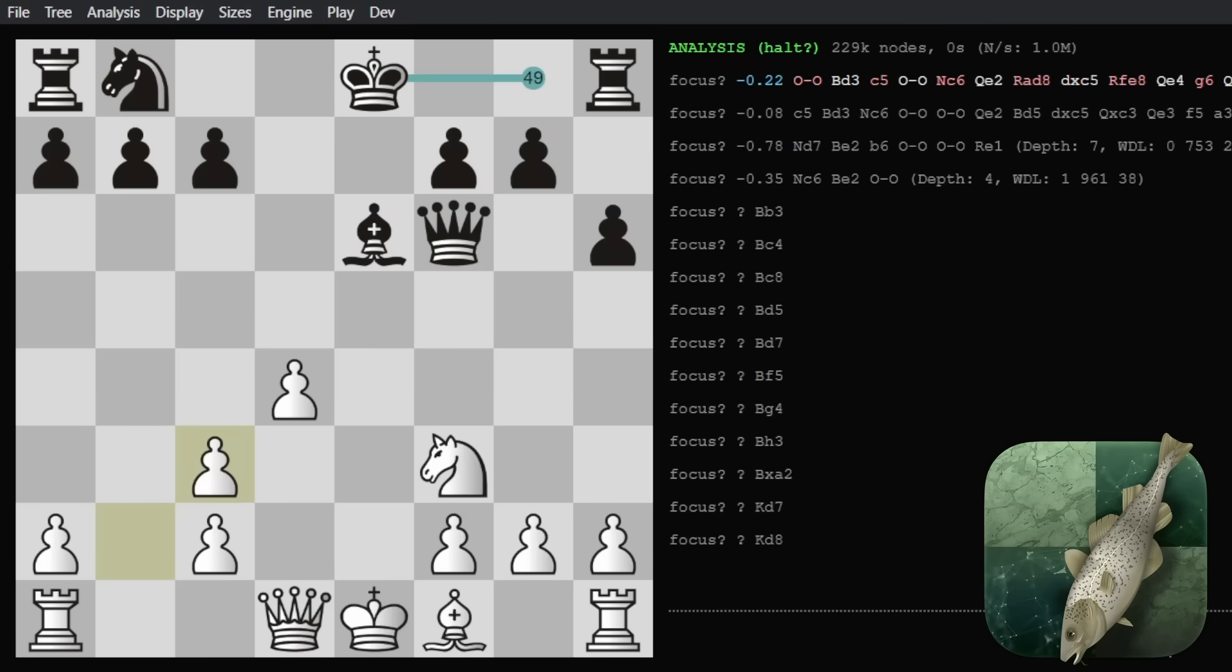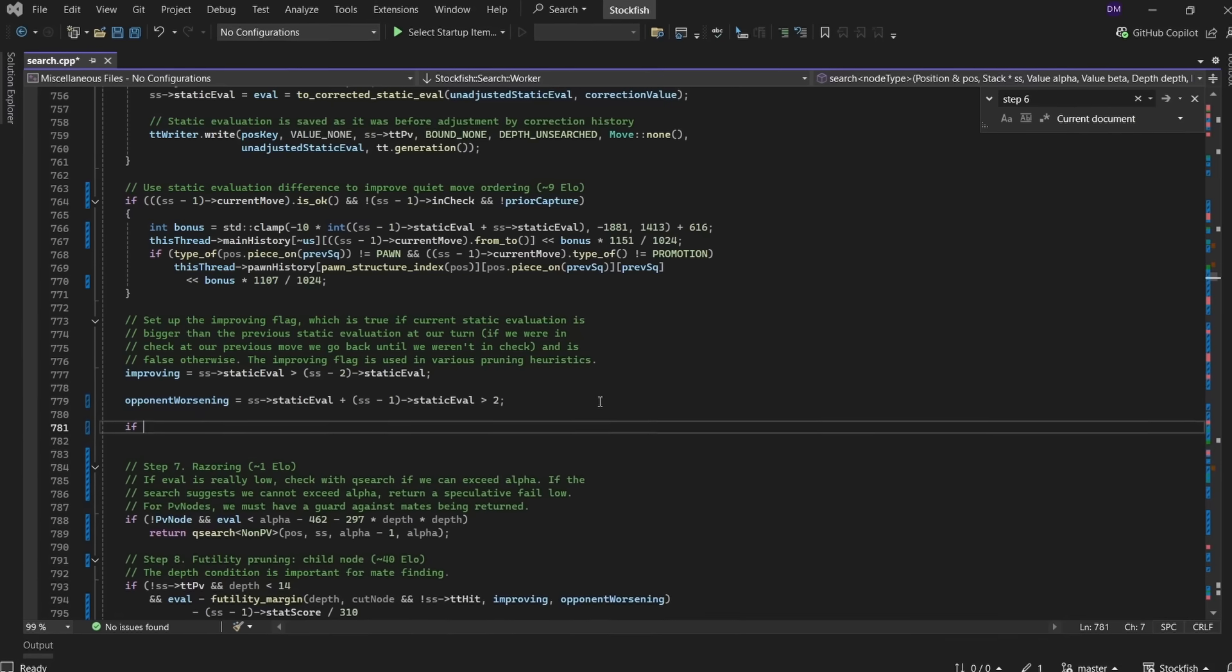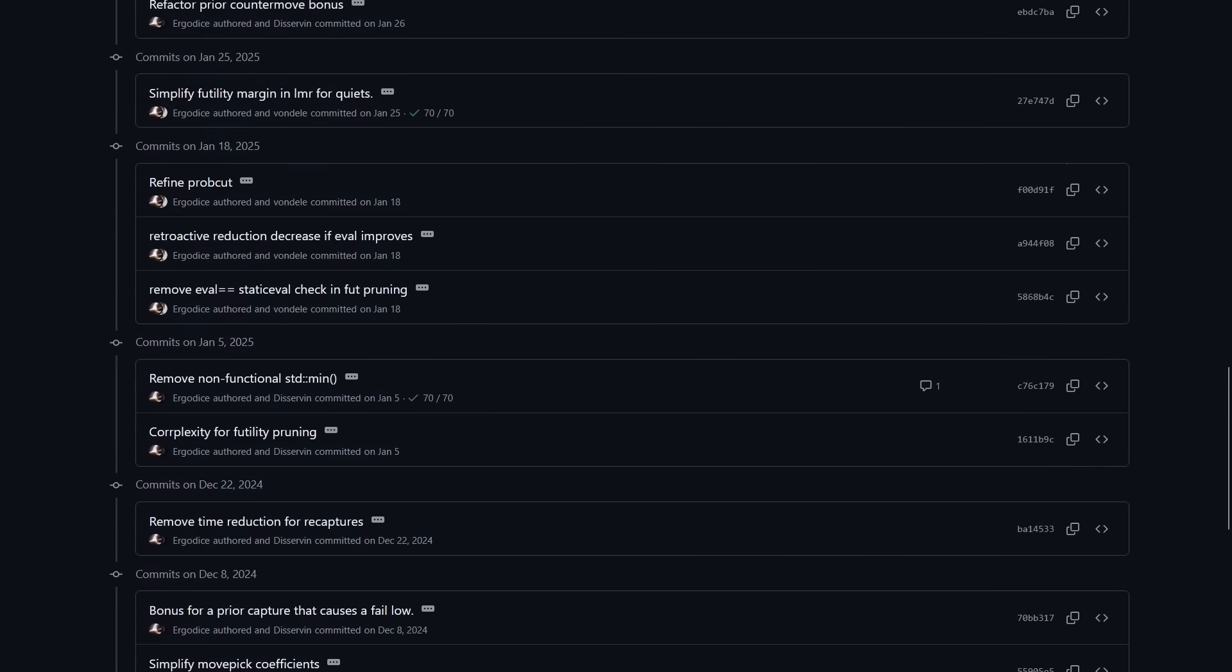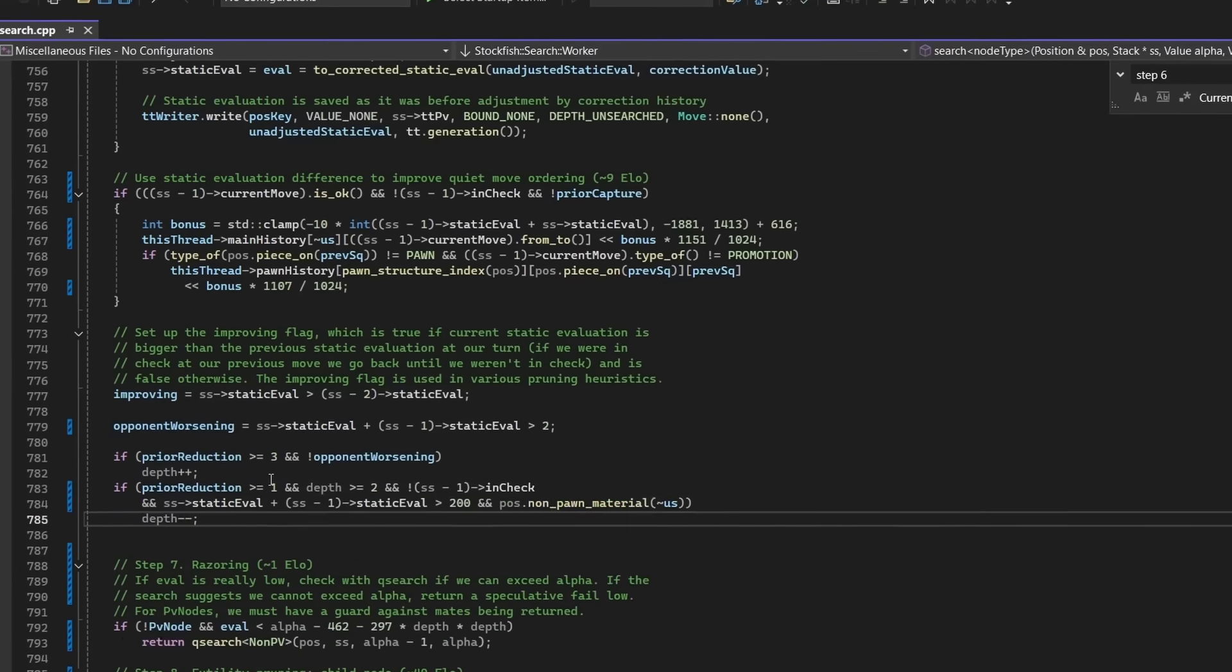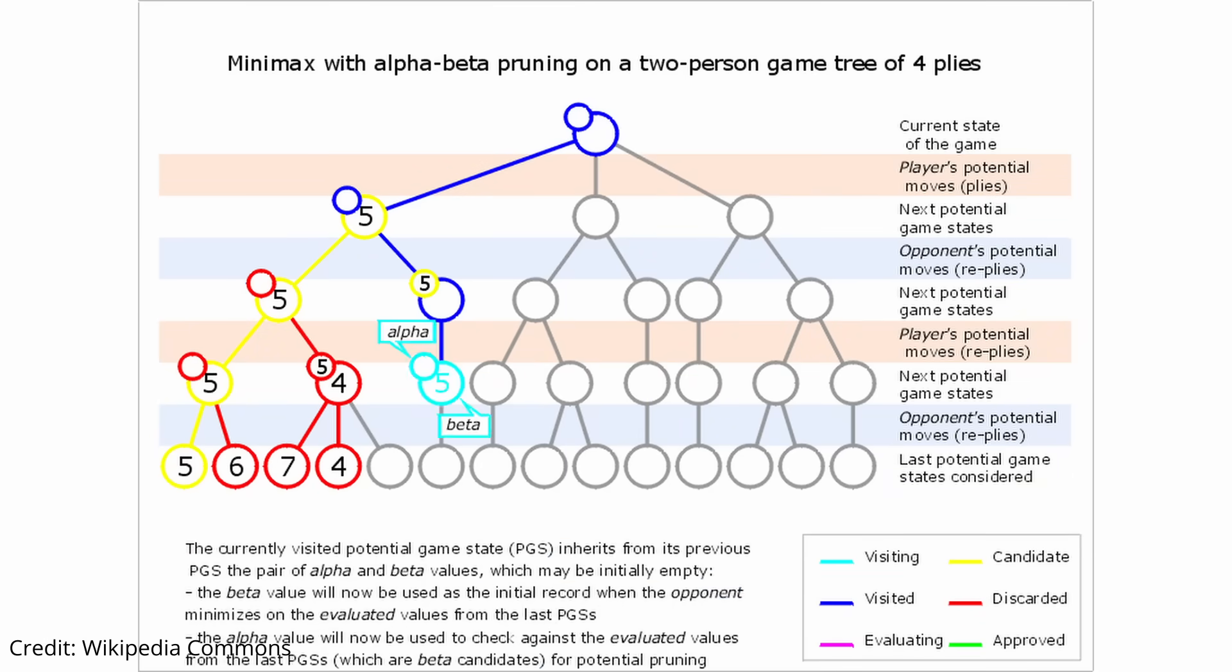I've improved Stockfish, the world's strongest chess engine, four times, and I just had two more elo-gaining changes accepted into the official code. This was probably my most clever idea yet, so today I'm going to show you how this monster chess bot analyzes a position and how I made it stronger.